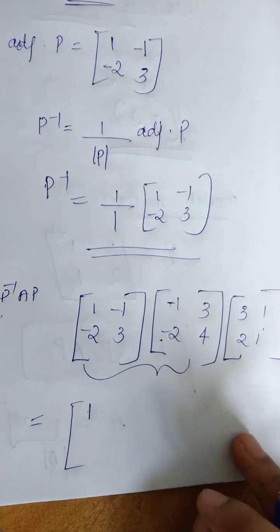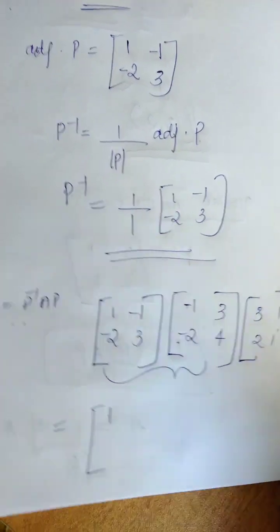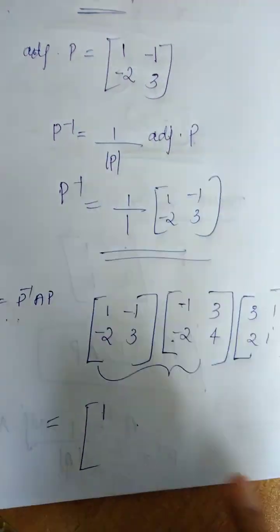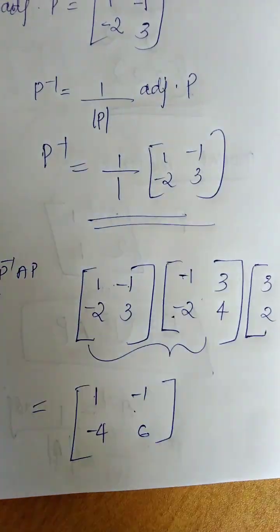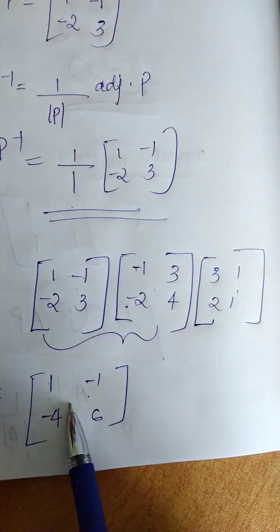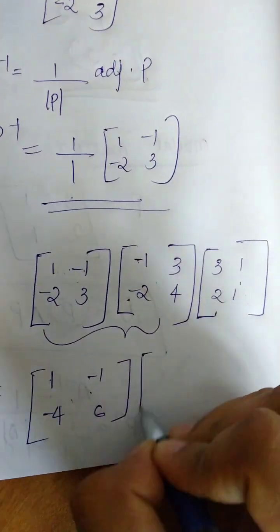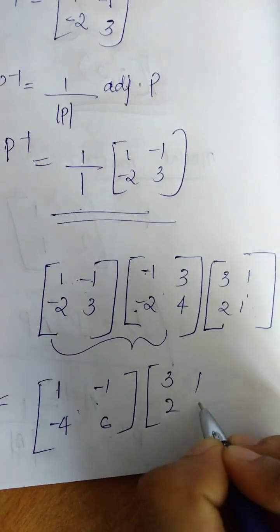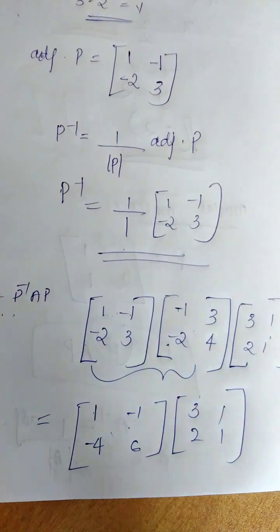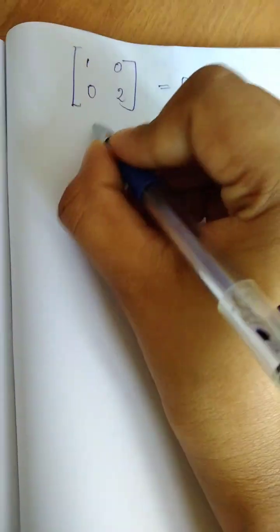Now we do the matrix multiplication for diagonalization. We multiply P inverse, A, and P together. Then we multiply that product matrix with the remaining matrix [3, 1; 2, 1]. The answer gives us the diagonal matrix D.